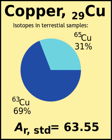For synthetic elements the isotope form depends on the means of synthesis, so the concept of natural isotope abundance has no meaning. Therefore, for synthetic elements the total nucleon count of the most stable isotope — i.e., the isotope with the longest half-life — is listed in brackets, in place of the standard atomic weight.